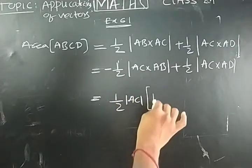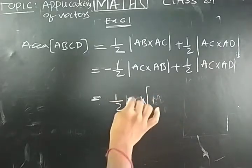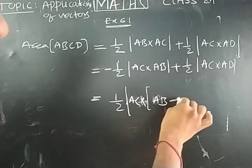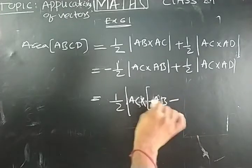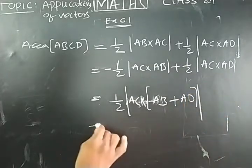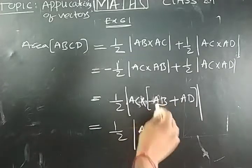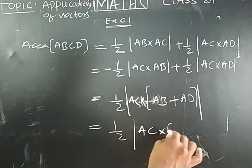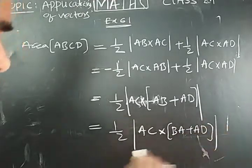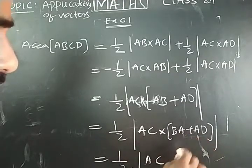Now taking half AC common, what you will get inside the bracket is AB cross plus AC cross AB. To remove the minus, I interchange to get BA, so you get BA plus AD. That is equal to half of AC cross (BA plus AD). By adding BA plus AD you will get BD.